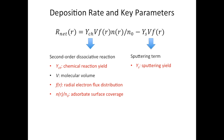There are three key parameters. One is the chemical reaction yield, which is the number of dissociated reactant molecules per incident electron. The second one is the radial electron flux distribution. And the third is the adsorbate surface coverage.